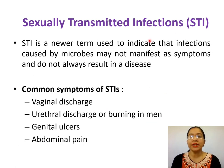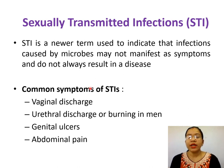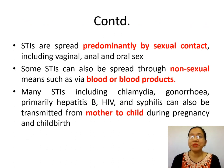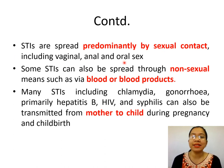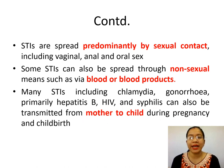STI is a new term based on the concept that somebody can have an infection without having a disease. STI indicates that infections caused by microbes may not manifest as symptoms and do not always result in disease. Common symptoms of STI can be vaginal discharge, genital ulcers, urethral discharge, or abdominal pain. STIs are predominantly spread by sexual contact including vaginal, oral, and anal sex. Some STIs can be spread via blood or blood products, and some may also be transmitted from mother to child during pregnancy and childbirth.